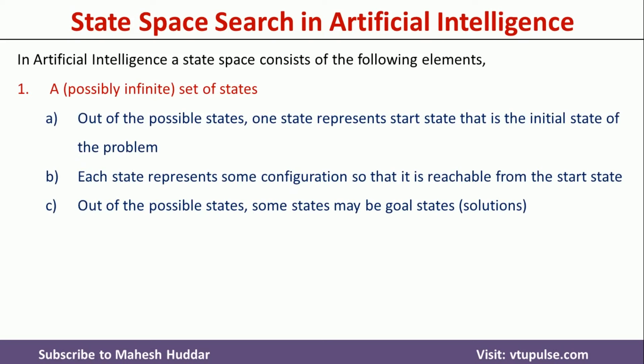The first element is a set of states. Possibly the number of states are infinite in artificial intelligence. Out of the possible states, one state represents the start state, that is the initial state of the problem. Each state represents some configuration, so that it is reachable from the start state. Out of the possible states, some states may be the goal states, that is nothing but the solution for a given problem.